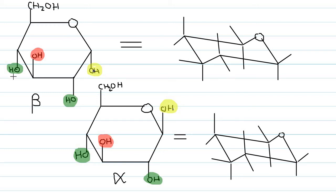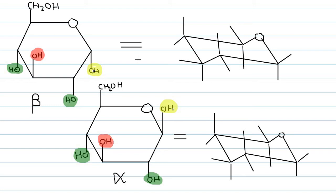Now how to place these groups on the chair conformation? Remember one thing: except for the newly formed OH group, all the bulky groups present on the carbons are on the equatorial site. Comparing CH2OH and hydrogen, CH2OH is bulkier. Comparing hydrogen and OH, the OH is bulkier. So the bulkier groups are placed on the equatorial site.